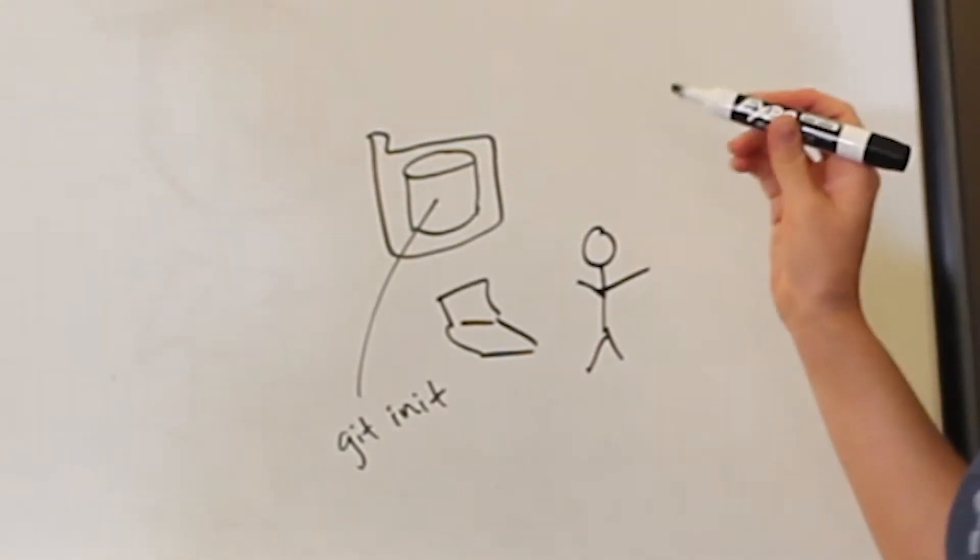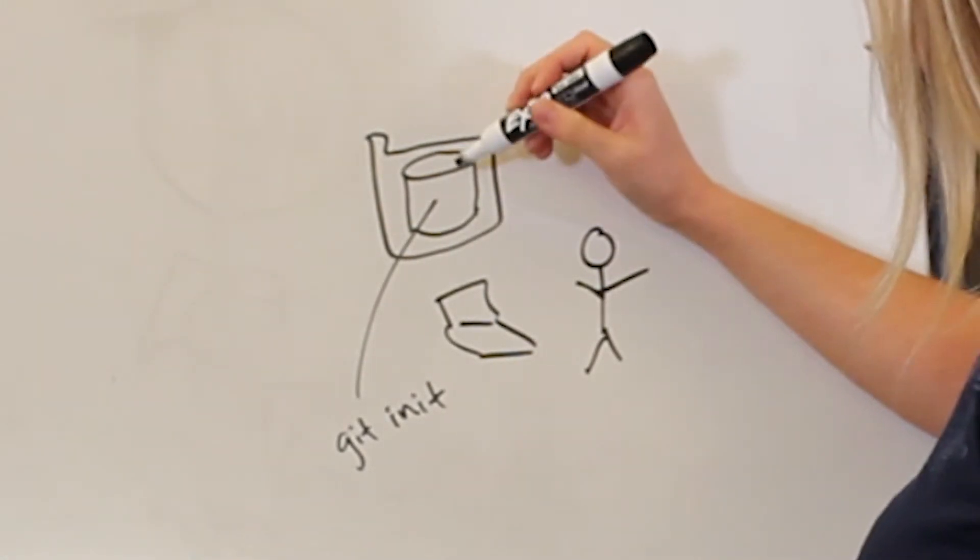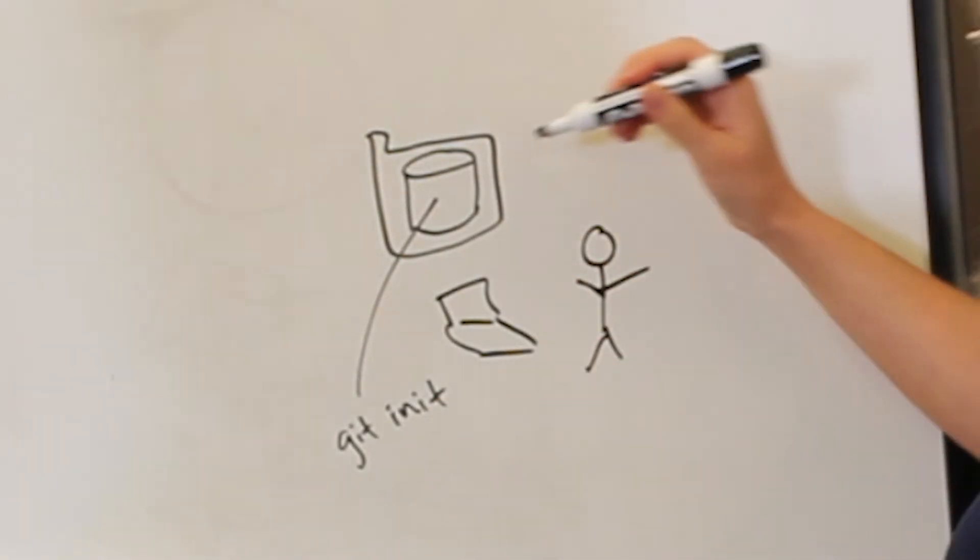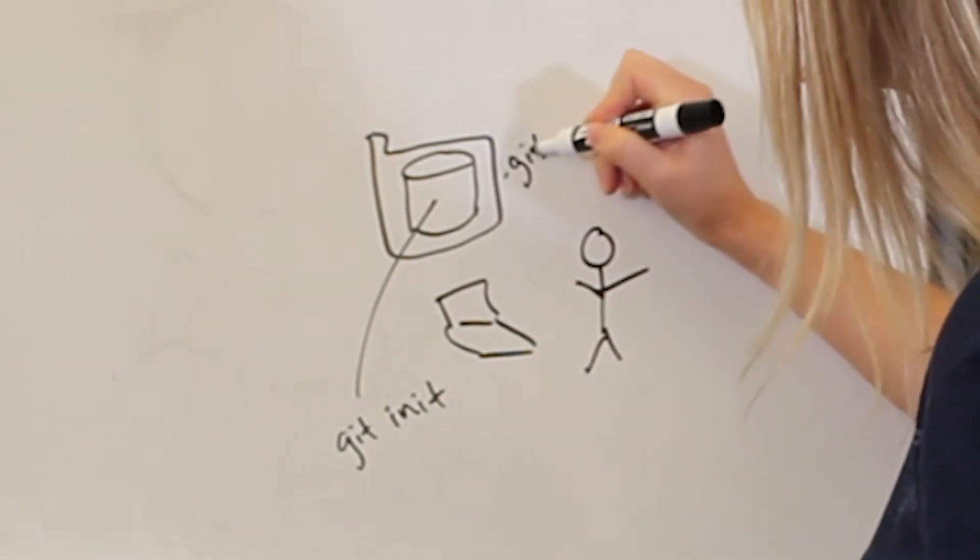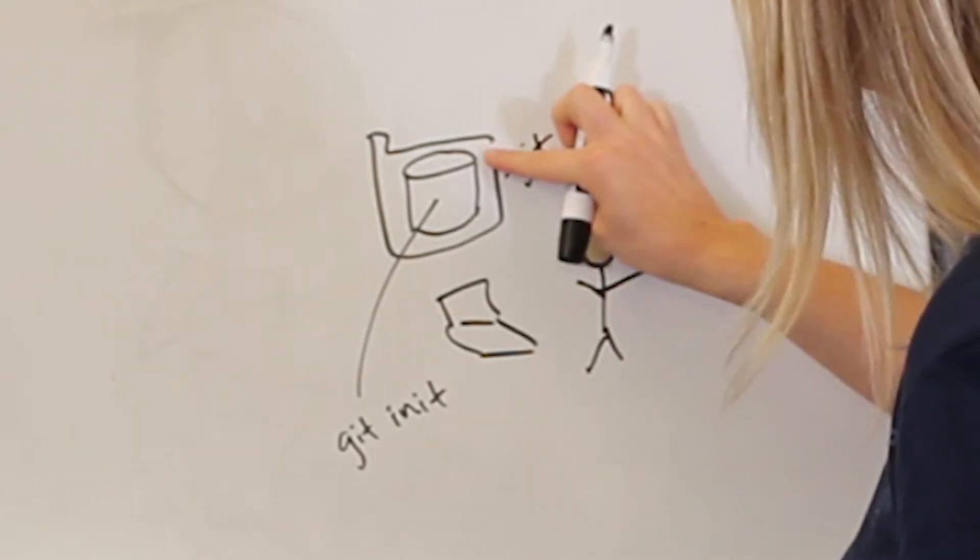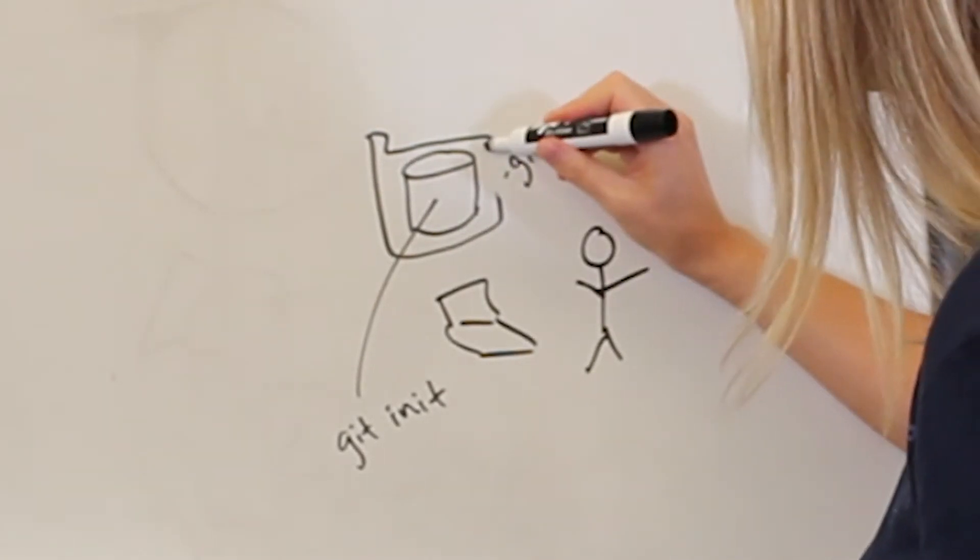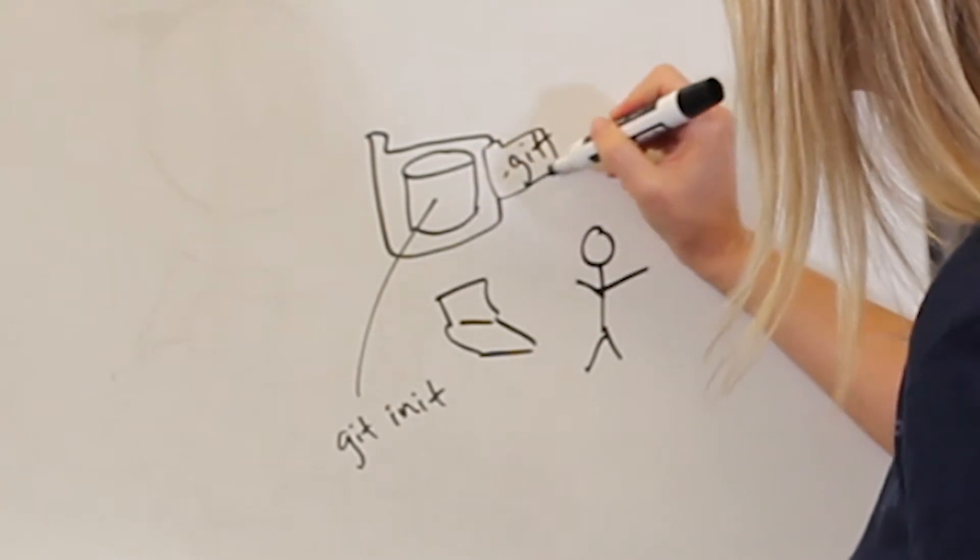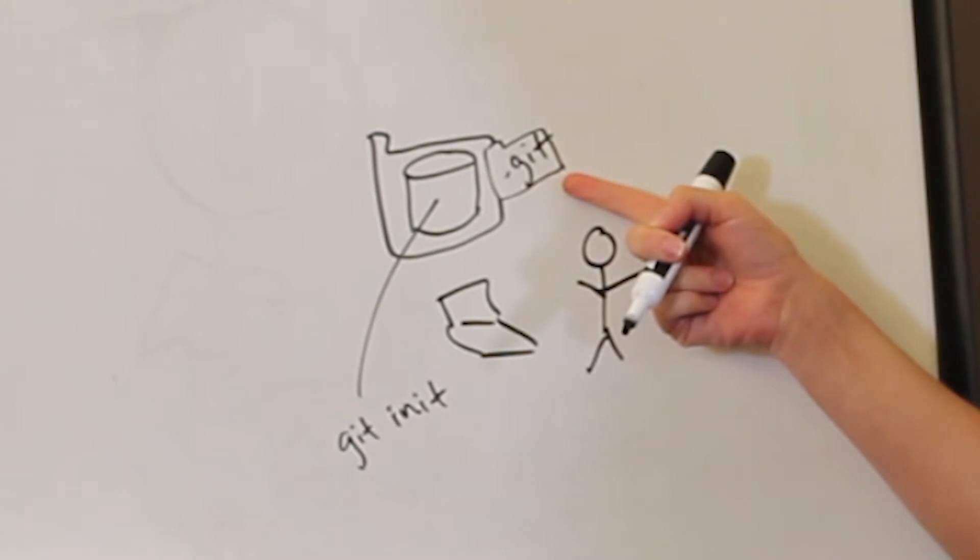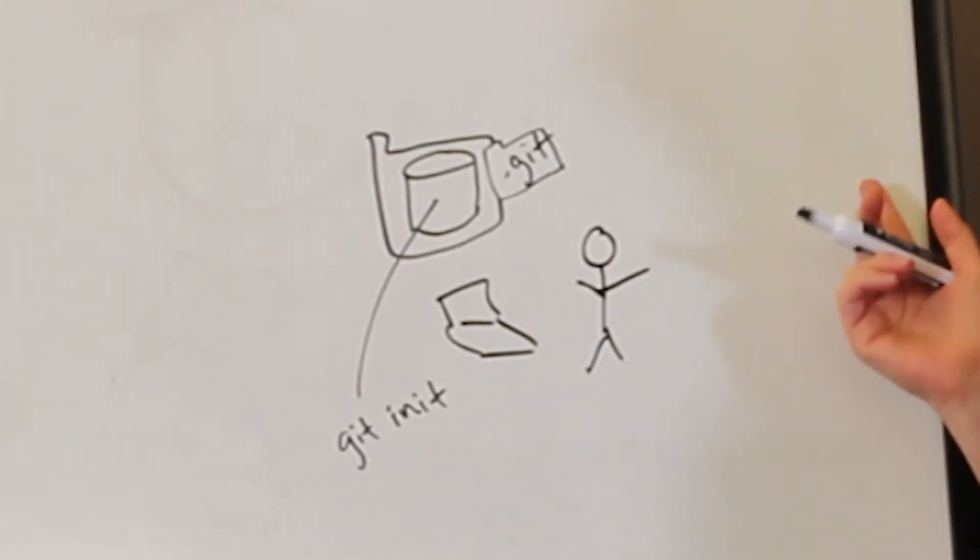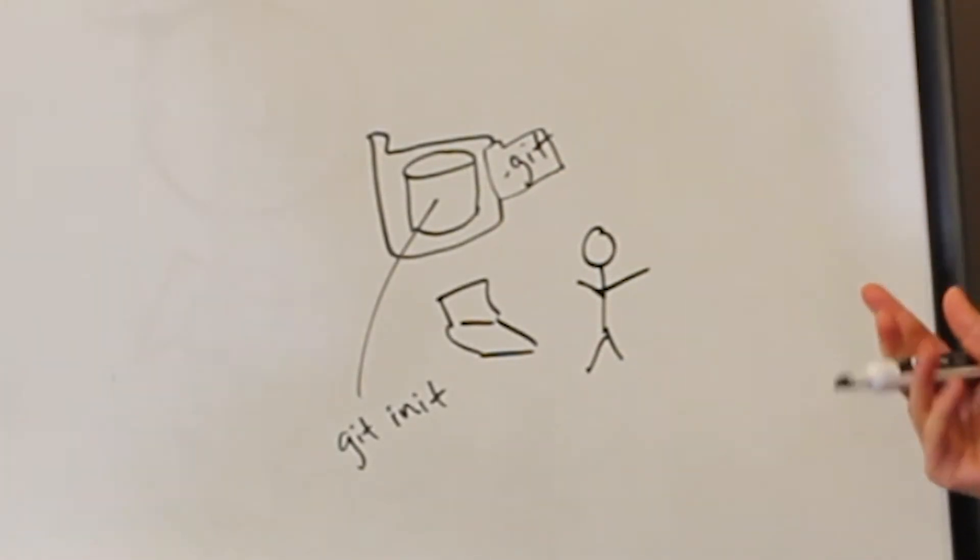It knows that it's a Git repository because it's got this super top secret folder here called .git. And the .git folder just lives inside of your folder and it houses all of the history and all of that. If you remove this folder, it's all gone. You're pretty much starting over from scratch from a Git perspective.